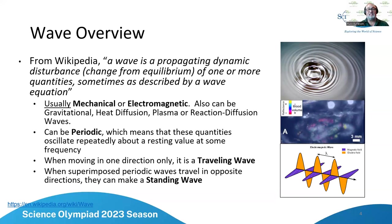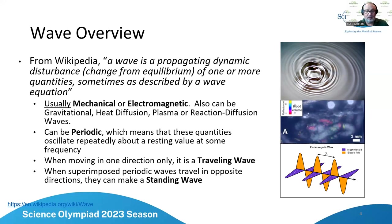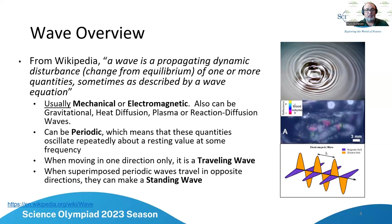Waves can be periodic — like pressing one key on an organ and leaving it, sending out a single frequency or chord of frequencies. However, you can also have singular events like the cannonball example, where there's a giant splash wave that may have subsequent waves but is definitely not periodic.